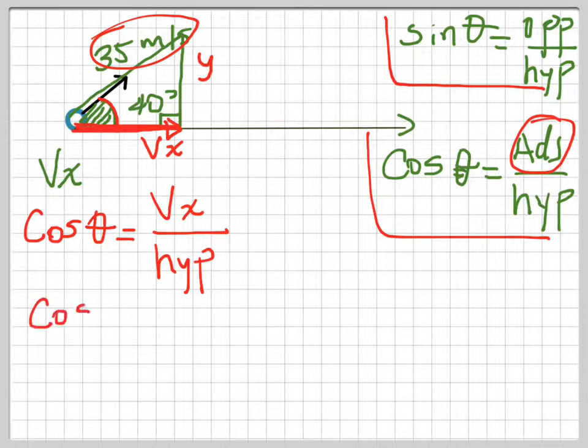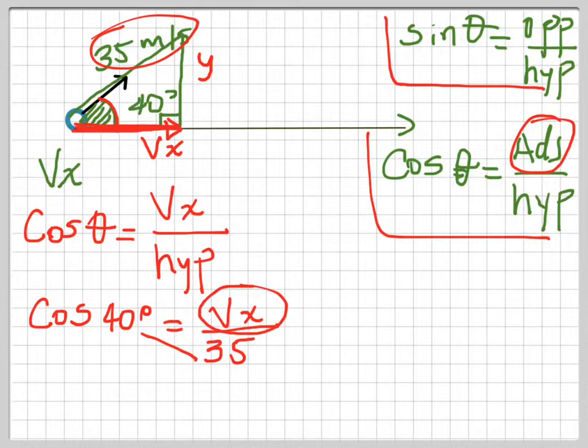Let's start substituting terms. Cosine of 40 degrees equals Vx divided by our hypotenuse, 35. All we have to do is multiply these two terms—they're across—so we multiply to find Vx.